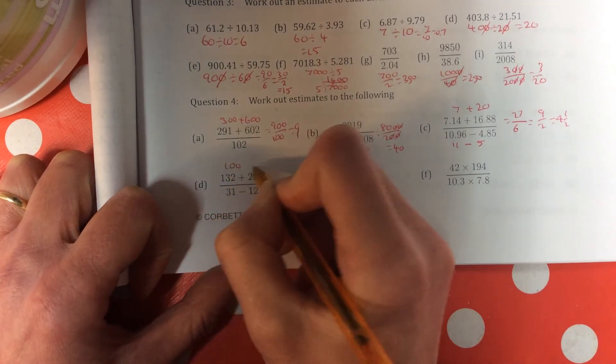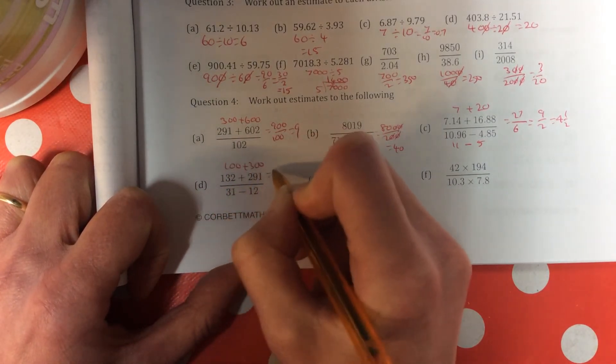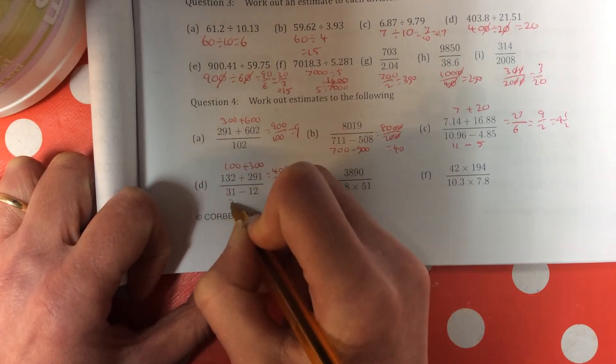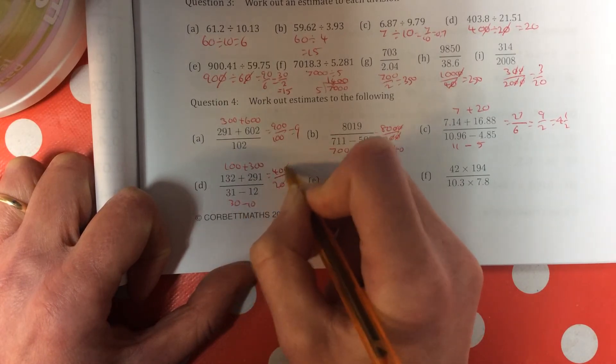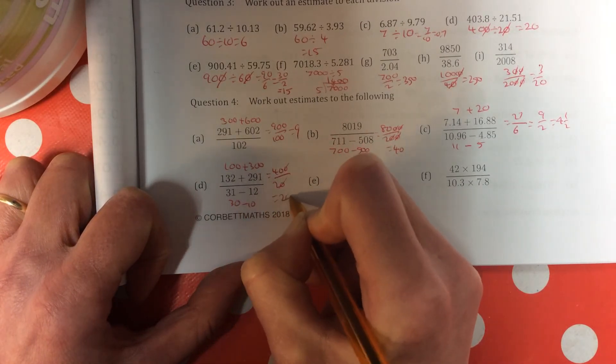Part D. 100 add 300 is 400. Bottom line is 30, take away 10, which is 20. 40 divided by 2 is 20.